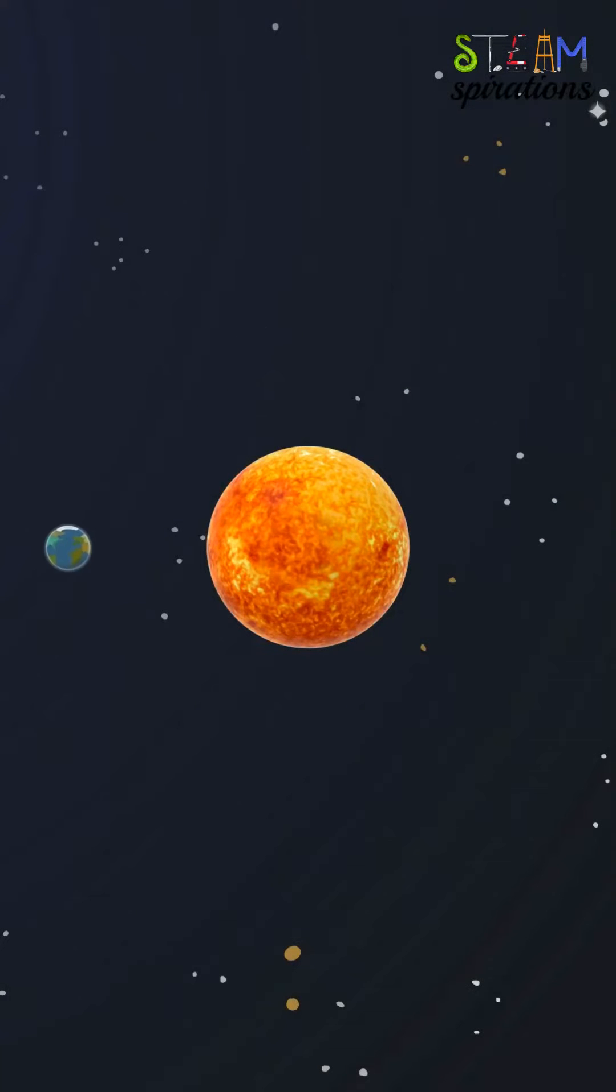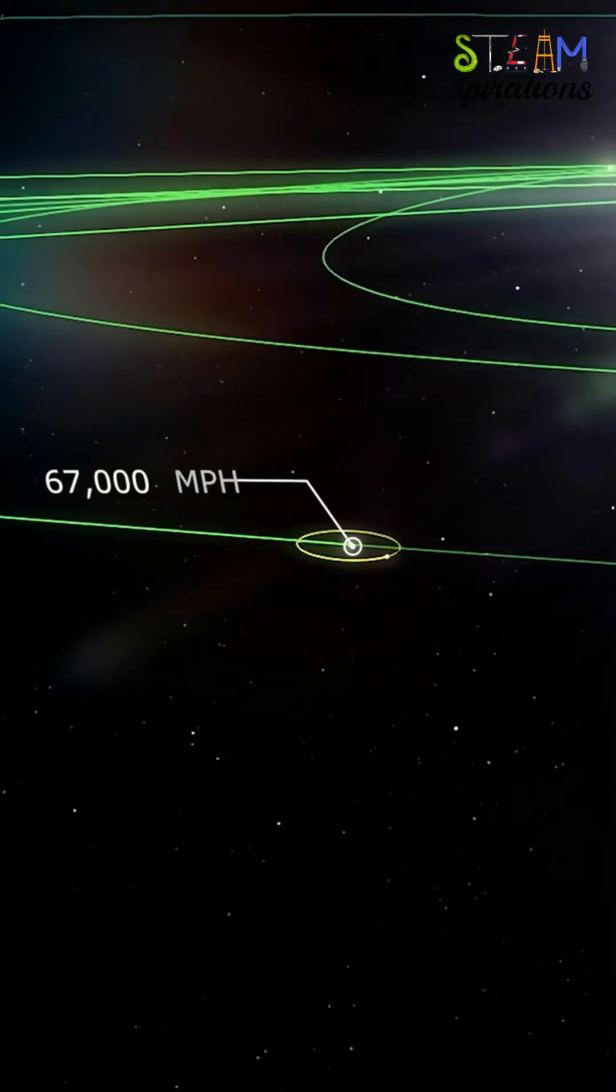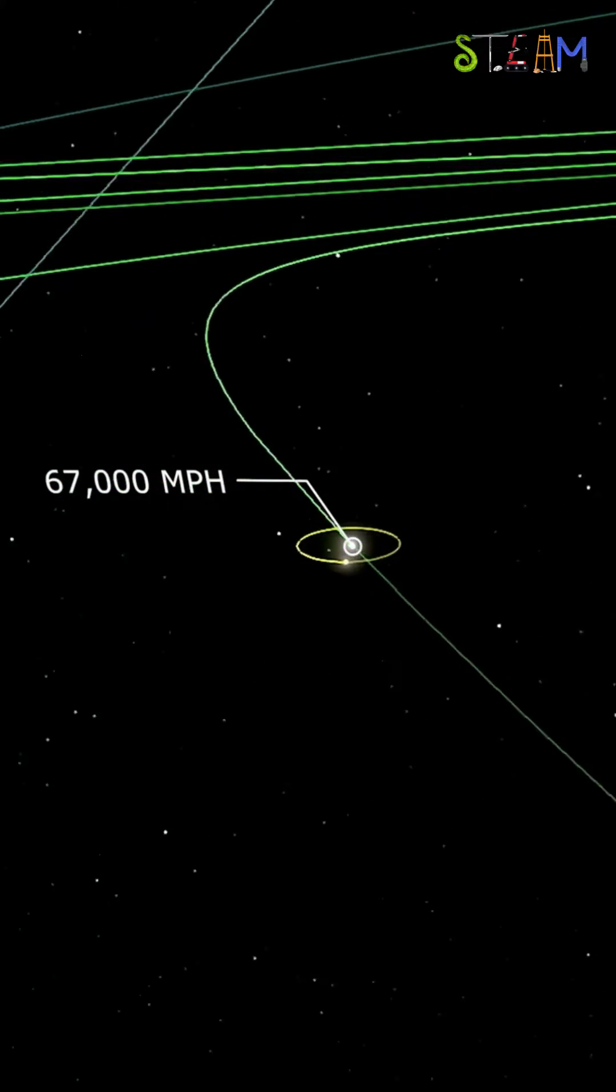Have you ever wondered what would happen if the Earth stopped revolving around the Sun? The Earth revolves around the Sun at a speed of 67,000 miles per hour.